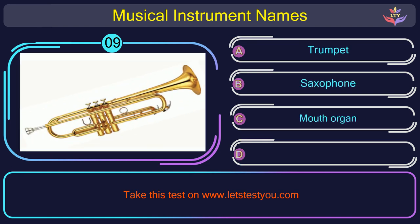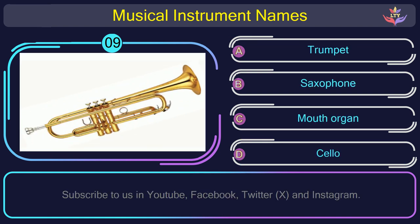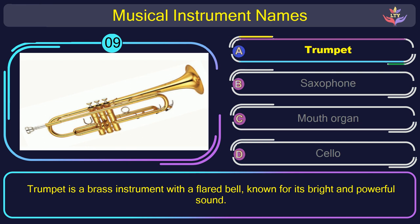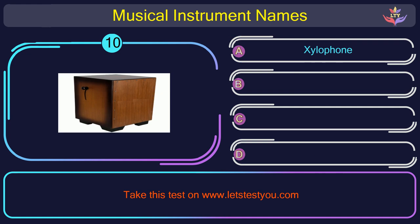Question number 9. What is the name of the musical instrument in this picture? The correct answer is option A: Trumpet. Trumpet is a brass instrument with a flared bell, known for its bright and powerful sound.